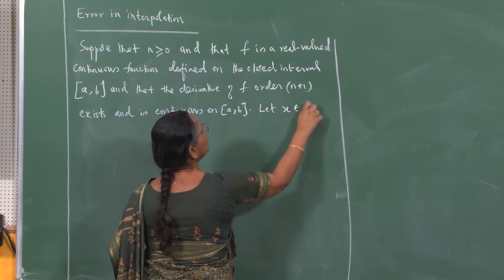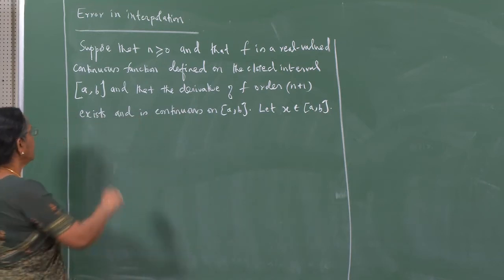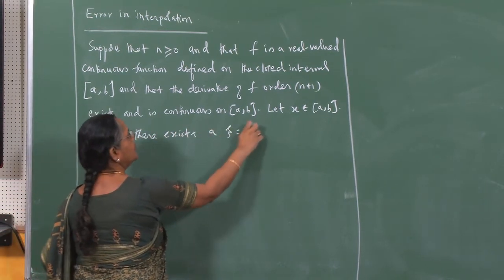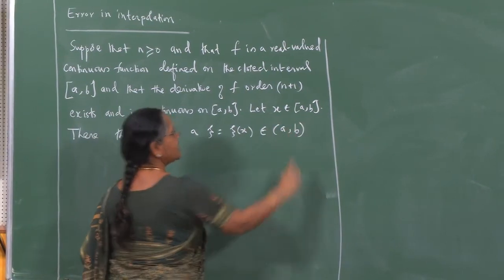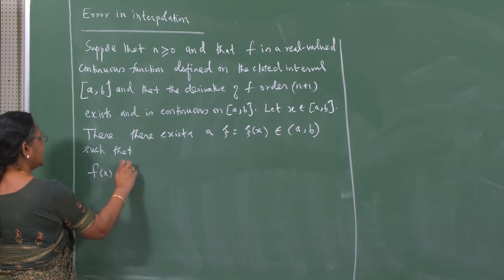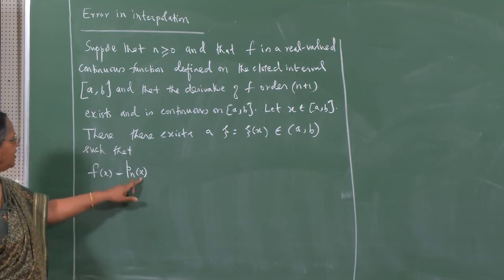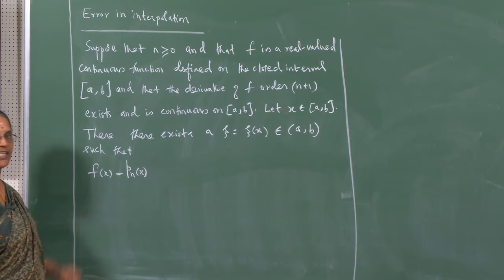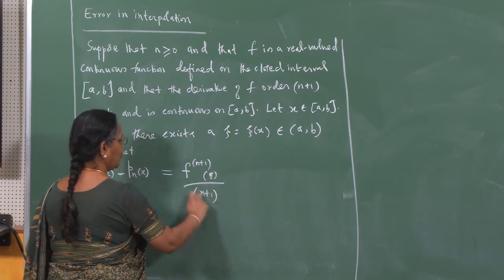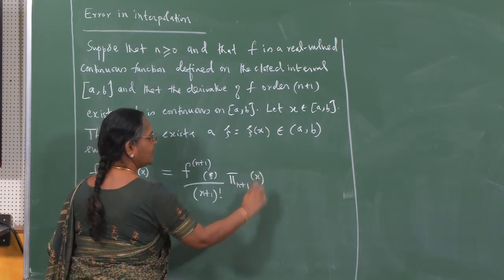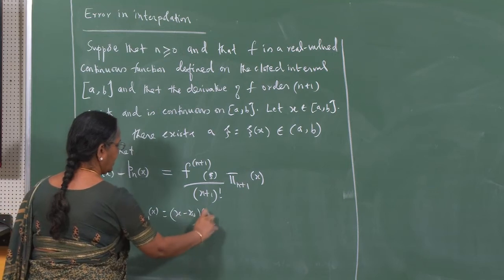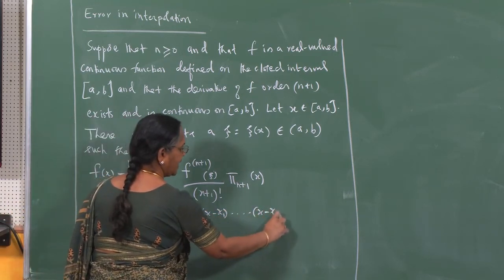Let x belong to the closed interval [a, b]. Then there exists a psi, which depends on x, belonging to the open interval (a, b), such that f(x) minus p_n(x) — the interpolating polynomial of degree at most n that interpolates f — equals the (n+1)th derivative at psi divided by (n+1) factorial, multiplied by π_{n+1}(x), where π_{n+1}(x) is (x − x₀)(x − x₁)···(x − xₙ).